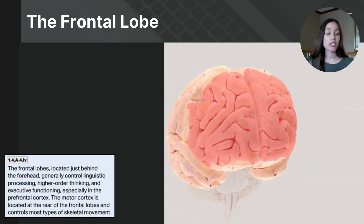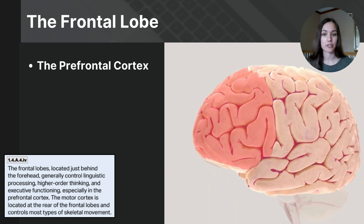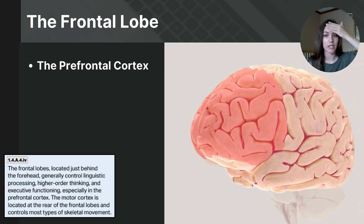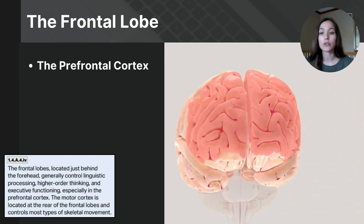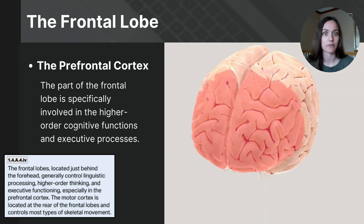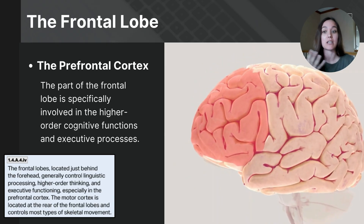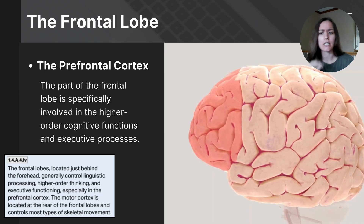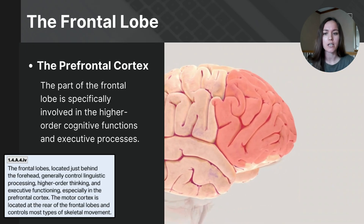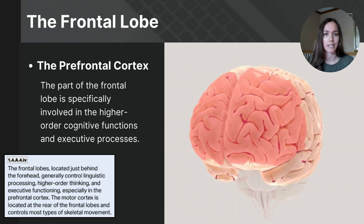There are three specialized areas within the frontal lobe you need to be familiar with. The first is the prefrontal cortex, located at the very front of the frontal lobe just behind the forehead. This part is specifically involved with higher-order cognitive functioning: planning, making decisions, making judgments, reasoning, problem-solving, regulating emotions, and controlling impulses — the functions central to our complex thinking.